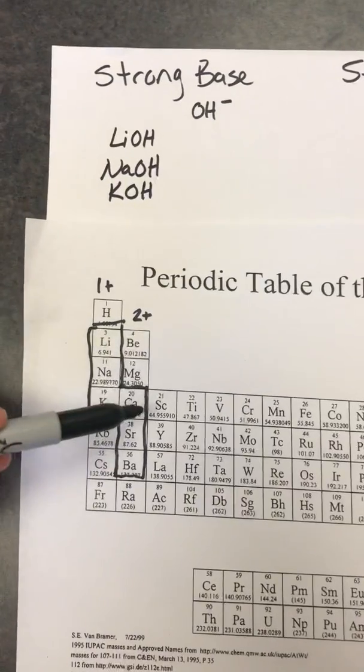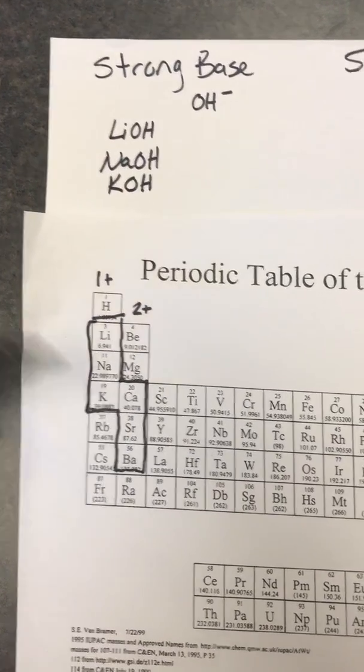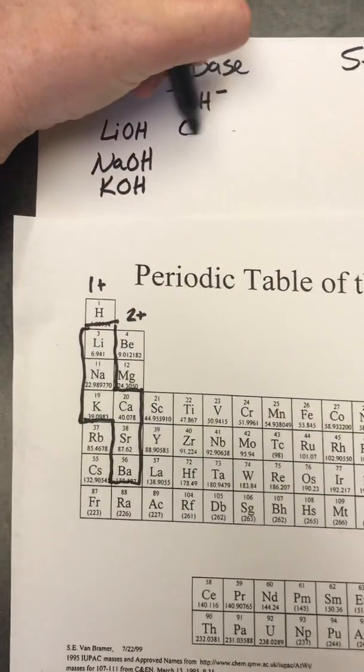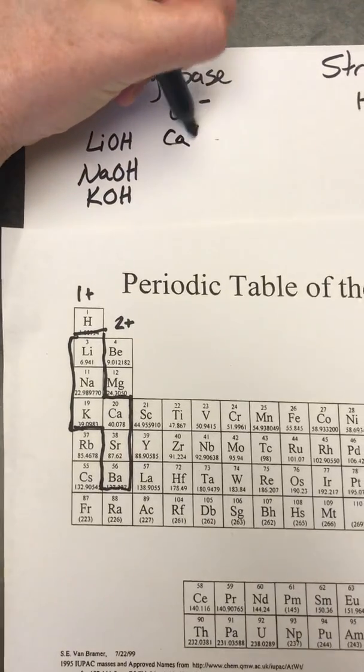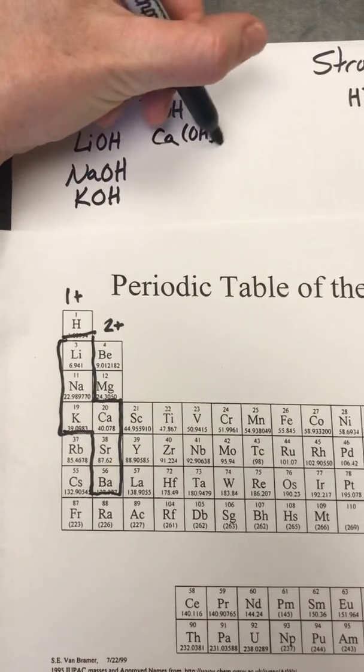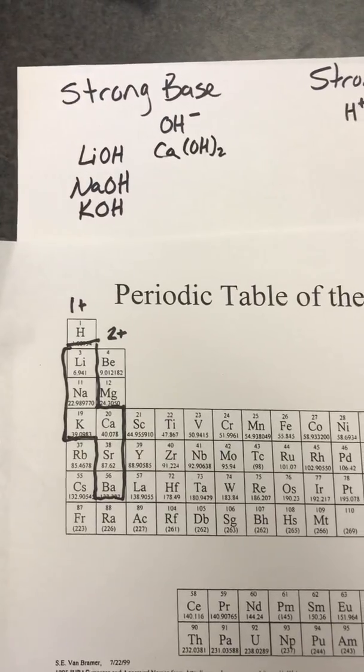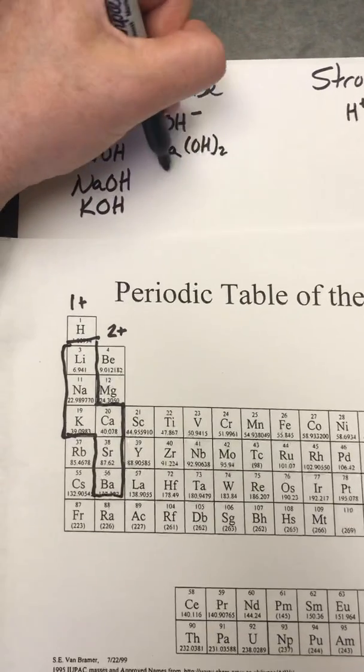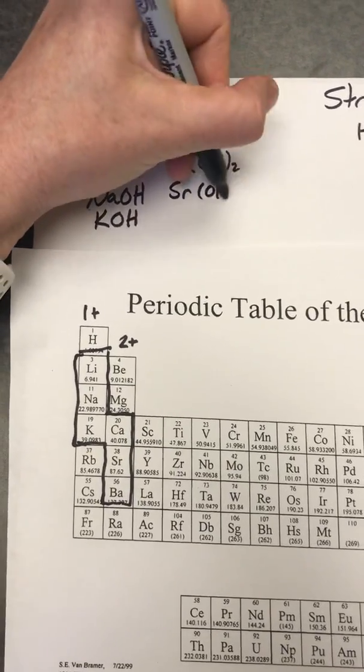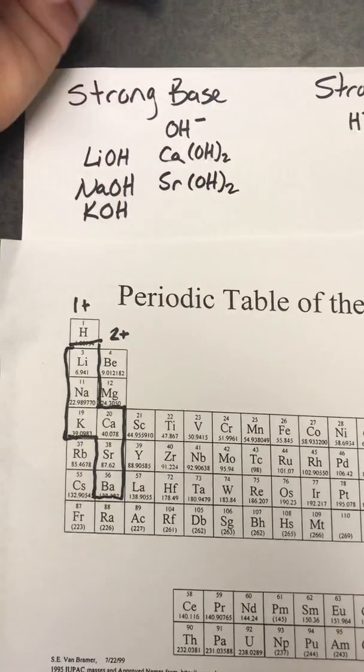Now we get to other strong bases, calcium, strontium, and barium. And again, calcium is a 2-plus charge, so we need 2 OH-s to cancel out that 2-plus charge. And same as strontium and barium.